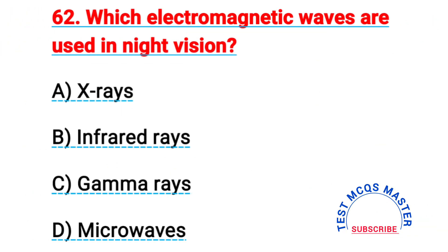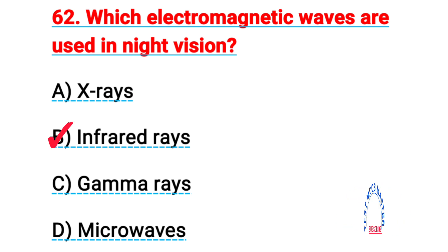Question number sixty-two: which electromagnetic waves are used in night vision? The right answer is B, infrared rays.